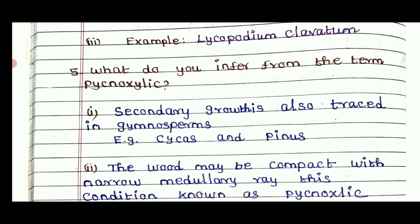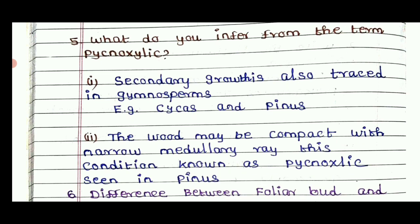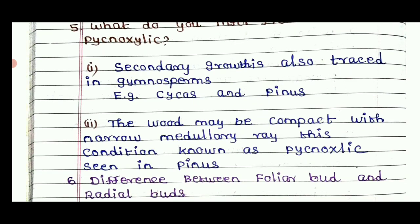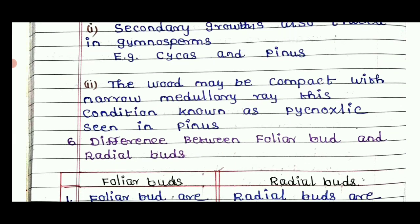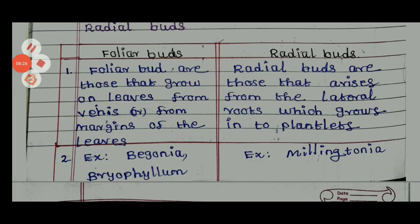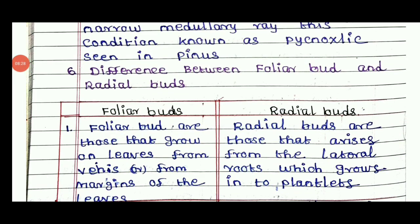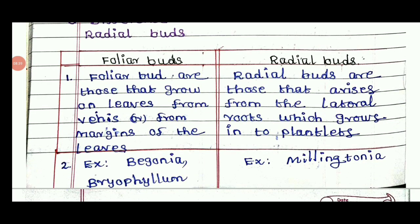What do you mean by phyllonocyclic? So this involves secondary growth — this is the final dicotyledon example. The difference between adventitious buds and radical buds. Polure buds and radial buds.